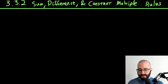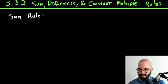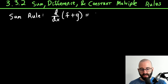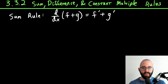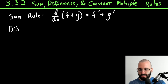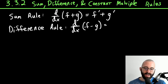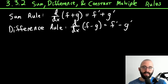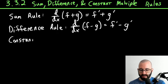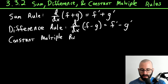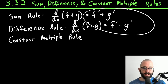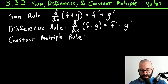Let's learn some more rules. These ones are actually pretty simple to prove, but we're not going to take the time to prove them. First, the sum rule: if you're taking the derivative of any two functions, that's just the derivative of the first function plus the derivative of the second. The difference rule should not be surprising — anything that goes for plus basically goes for minus. These follow directly from limit laws.